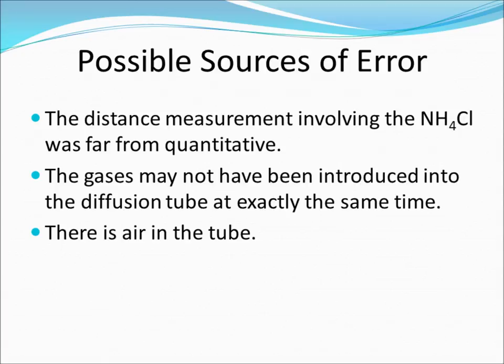There are several possible sources of error in our experiment. Firstly, the distance measurement involving the ammonium chloride was far from quantitative. Secondly, the gases may not have been introduced into the diffusion tube at exactly the same time. Thirdly, there's also air in the tube and the air molecules, that is nitrogen and oxygen, will have collisions with our gaseous species that we introduced, making things a little bit more complicated.